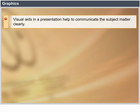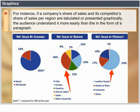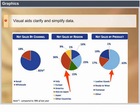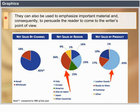Graphics. Visual aids in a presentation help to communicate the subject matter clearly. For instance, if a company's shares of sales and its competitors' shares of sales per region are tabulated or presented graphically, the audience would understand it more easily than if the same information is presented in the form of a paragraph. Visual aids thus clarify and simplify data. They can also be used to emphasise important material and consequently to persuade the reader to come around to the writer's point of view.